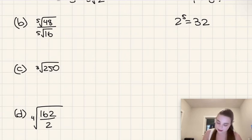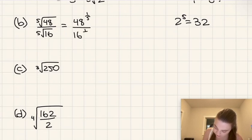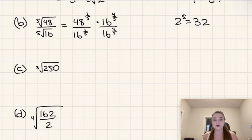So what I'm going to do is I'm first going to just rewrite this as 48 to the power of 1/5 over 16 to the power of 1/5. And at this point, it's probably clear how we can get rid of it, that if we multiply top and bottom by 16 to the power of 4/5 over 16 to the power of 4/5, then that is going to be good. That's going to work for us.